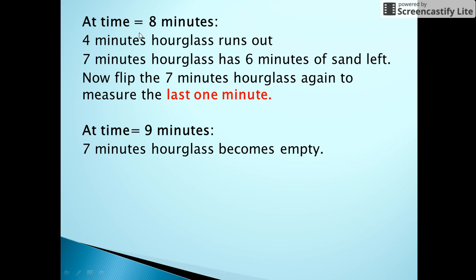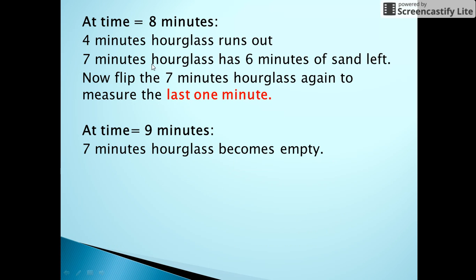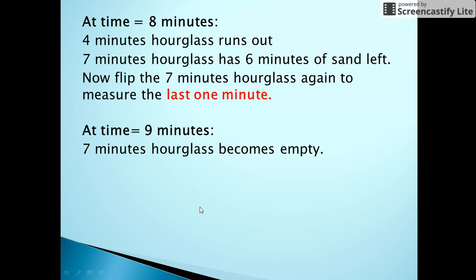Here comes the trickier part. At the instant t equals eight minutes, the four minutes hourglass would run out of sand, since at t equals seven minutes it was only left with one minute of sand. Now the seven minutes hourglass still would have six minutes of sand left in its upper lobe, since we flipped it at t equals seven minutes. So flip the seven minutes hourglass again at this instant to measure the last one minute.